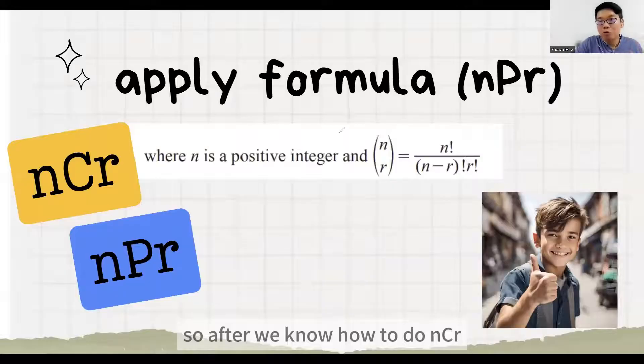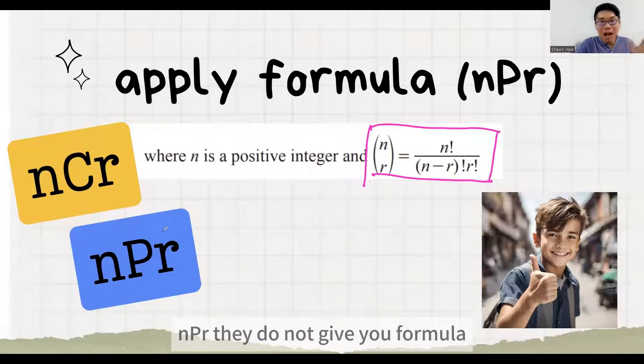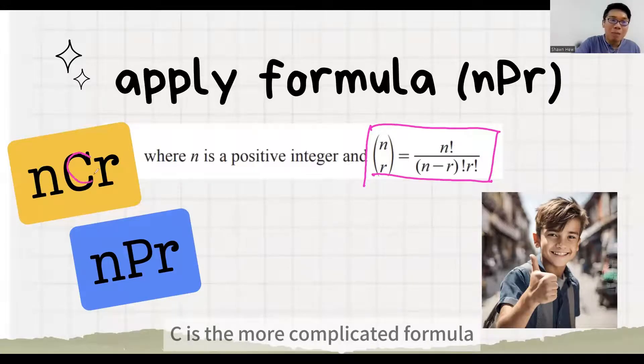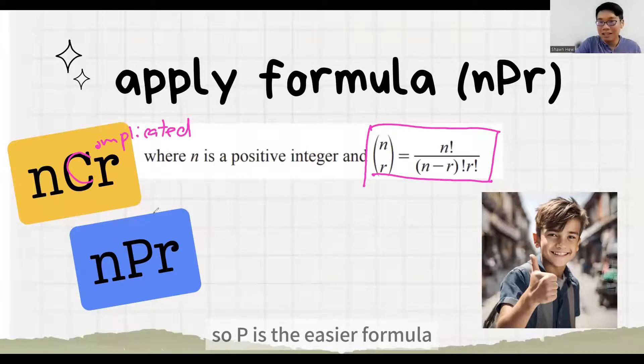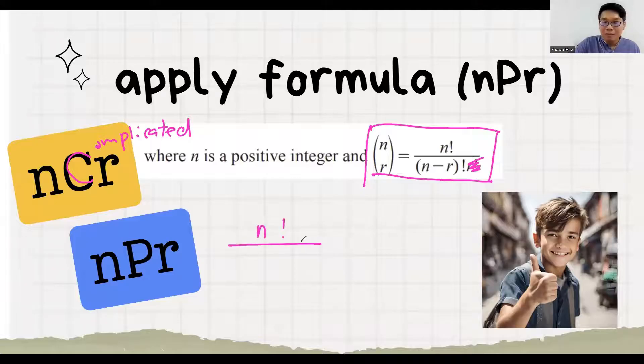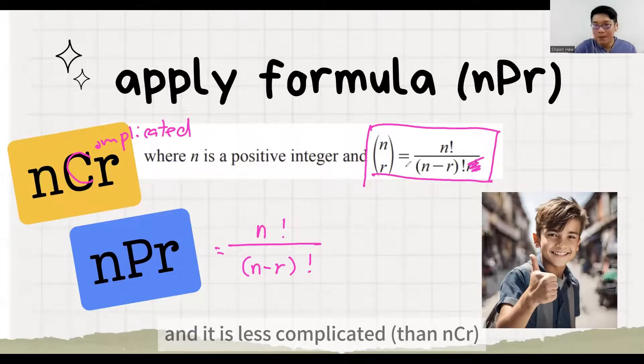So after we know how to do nCr formula given, then we need to see what is nPr. nPr they do not give you in formula sheet. Then how? You need to know. C is the more complicated formula. So P is the easier formula. How much easier is it? You just remove this part. So nPr is just n factorial over n minus r factorial. So this is nPr and it is less complicated.